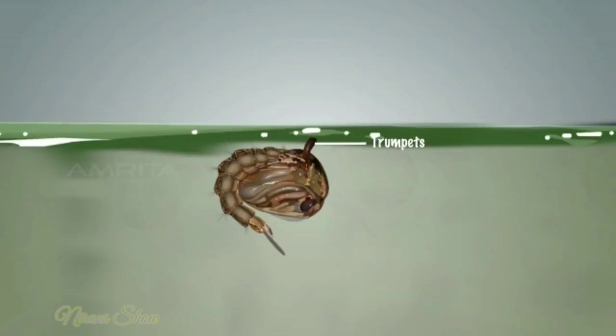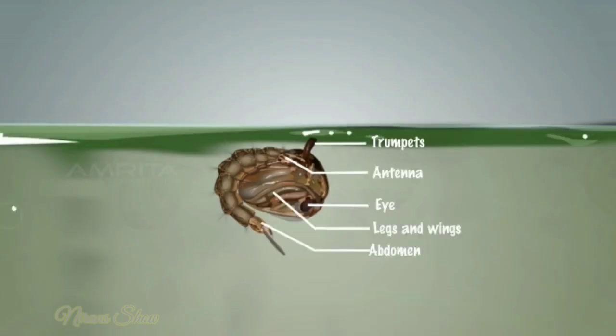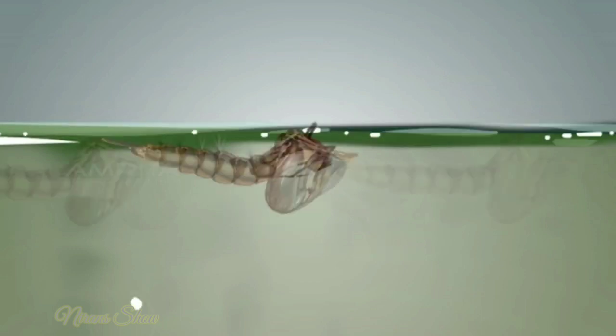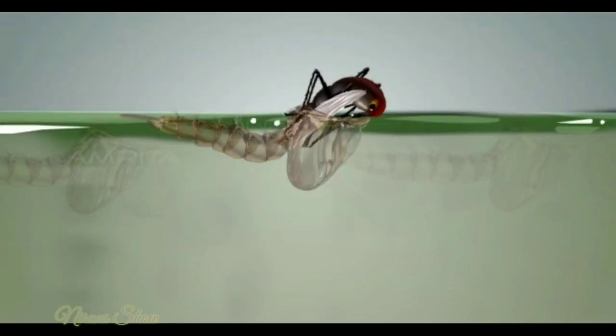Mosquito pupae are commonly called 'tumblers,' a resting, non-feeding stage. They must take in oxygen from time to time through two breathing tubes known as trumpets. They have short curved bodies with antennae, eyes, legs, wings, and an abdomen. The pupal skin splits along the top of the case when the adult mosquito is ready to emerge.